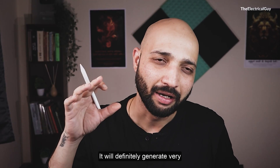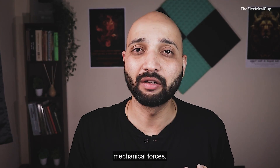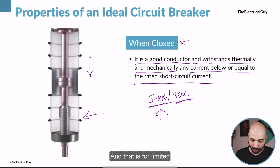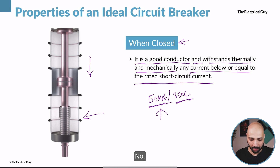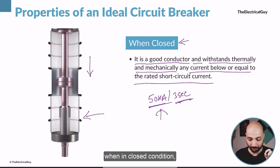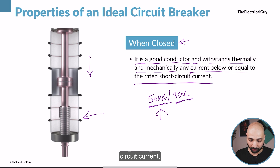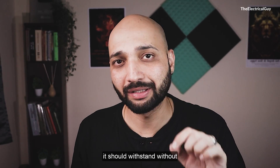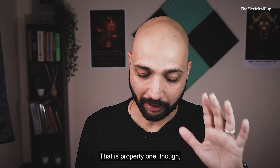At 50,000 amperes, very high thermal issues and mechanical forces are generated. The circuit breaker should withstand all of these without any issue. It is for a limited time period — 50 kilo amps won't flow for hours; a specific time is defined, such as 3 seconds or 1 second. So Property 1 is clear: a good conductor when in closed condition, withstanding thermally and mechanically any current at or below the rated short circuit current.